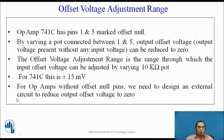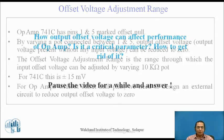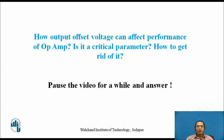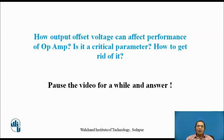Some op-amps do not have the facility of connecting a pot between pin 1 and 5 — they do not have offset null pins like the 741. In that case, we have to design an external circuit to reduce the output offset voltage to zero. Please pause the video to answer: How does output offset voltage affect the performance of the op-amp? Is it desirable or undesirable, and how can we reduce it to zero?